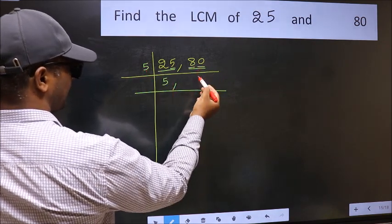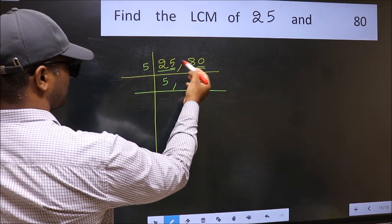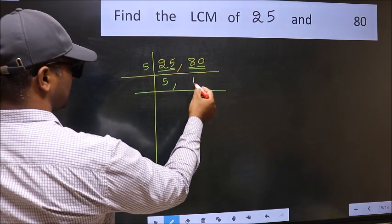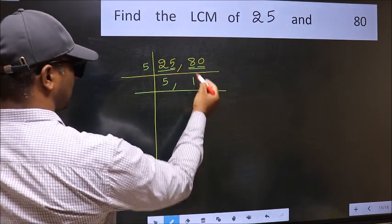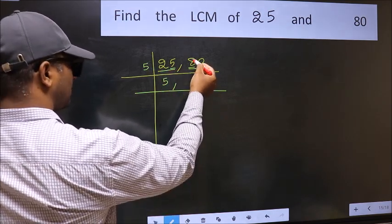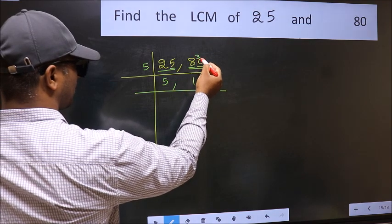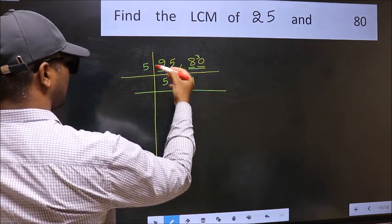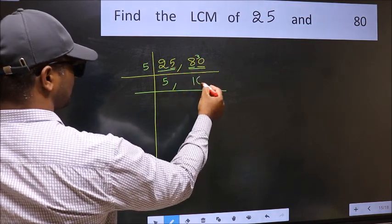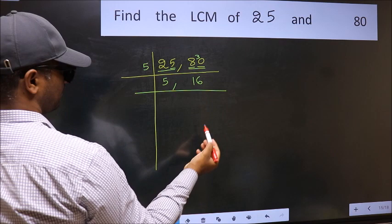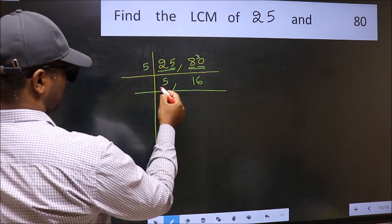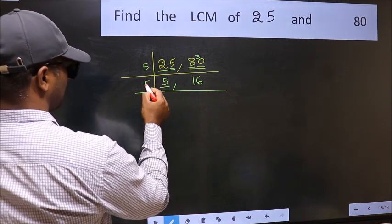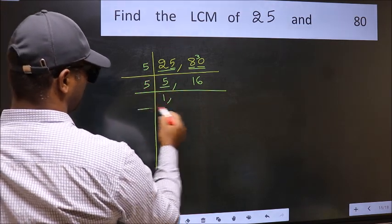The first digit of 80 is 8. A number close to 8 in the 5 table is 5 times 1 equals 5. 8 minus 5 is 3, carry forward 30. 5 times 6 is 30, so 80 divided by 5 is 16. Now we have 5, which is a prime number, so 5 times 1 is 5.